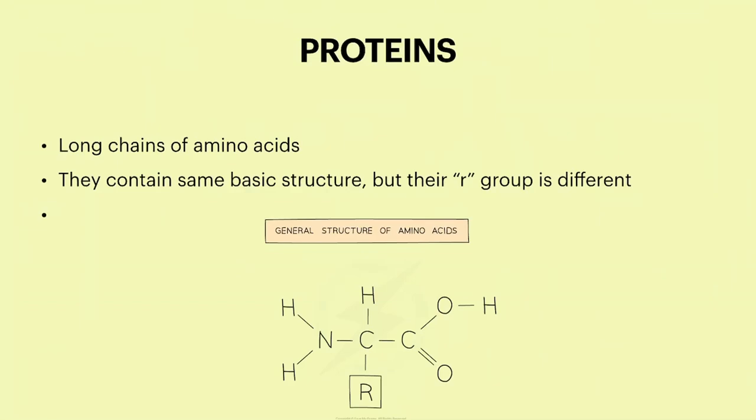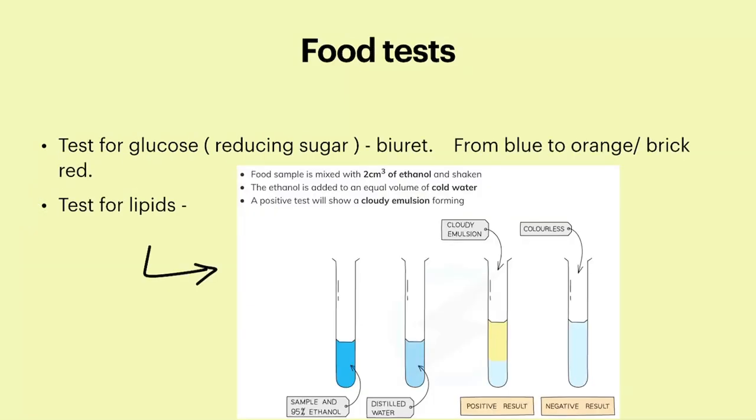Proteins are long chains of amino acids. They contain the same basic structure, but their R group is different. There are 20 different types, so their R group will be different.